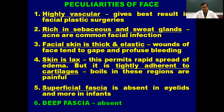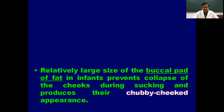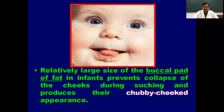The superficial fascia is absent in the eyelids, so there is no fat there — this is important for infants for suckling milk from the mother's breast. The deep fascia is also absent in the face except for the parotid fascia, which is a modification of the deep cervical fascia encircling the parotid gland. The large buccal pad of fat in infants prevents collapse of the cheeks during suckling and produces their chubby appearance.